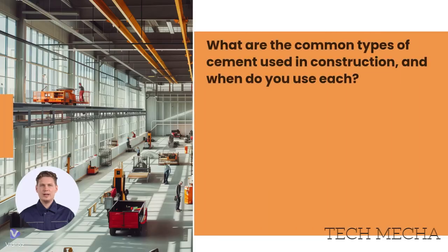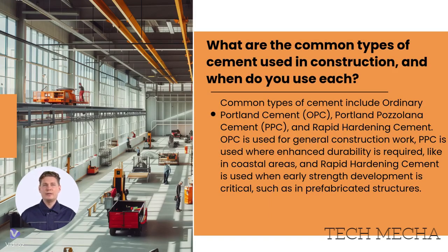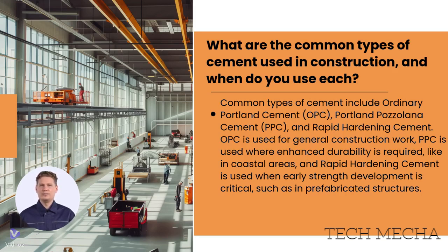What are the common types of cement used in construction, and when do you use each? Common types of cement include Ordinary Portland Cement (OPC), Portland Pozzolana Cement (PPC), and rapid hardening cement. OPC is used for general construction work, PPC is used where enhanced durability is required such as in coastal areas, and rapid hardening cement is used when early strength development is critical.